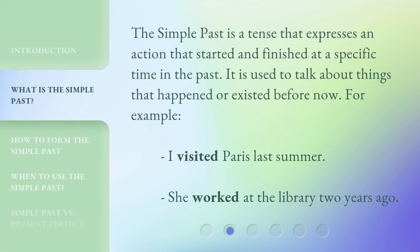The simple past is a tense that expresses an action that started and finished at a specific time in the past. It is used to talk about things that happened or existed before now. For example: 'I visited Paris last summer.' 'She worked at the library two years ago.'